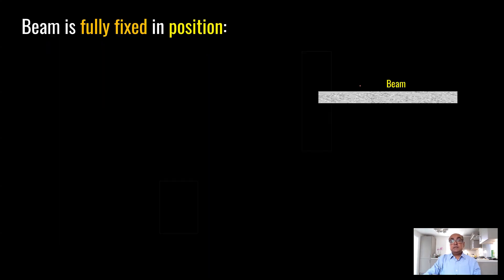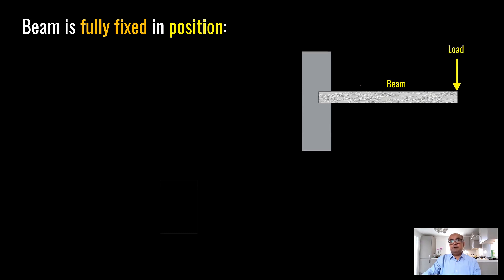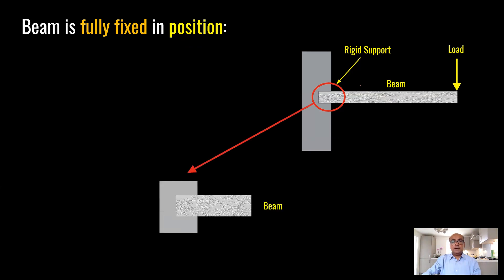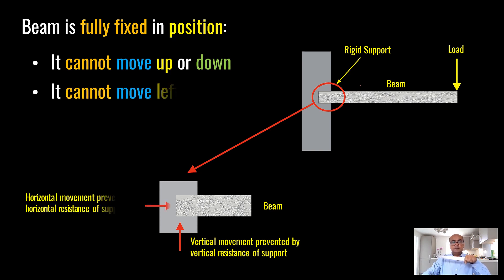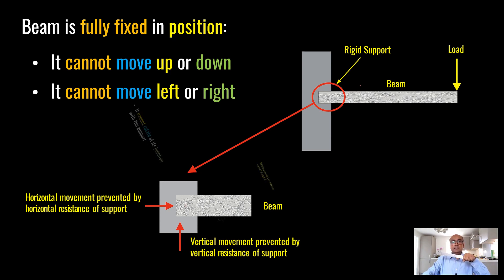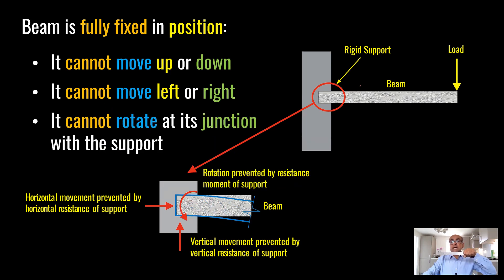The beam is fully fixed in position. Looking at the details of a rigid support: it cannot move in an upward or downward direction — vertical movement is prevented by vertical resistance. It cannot move in horizontal direction — horizontal movement is prevented by horizontal resistance. And it cannot rotate; the support is so rigid that it prevents the beam from rotating.